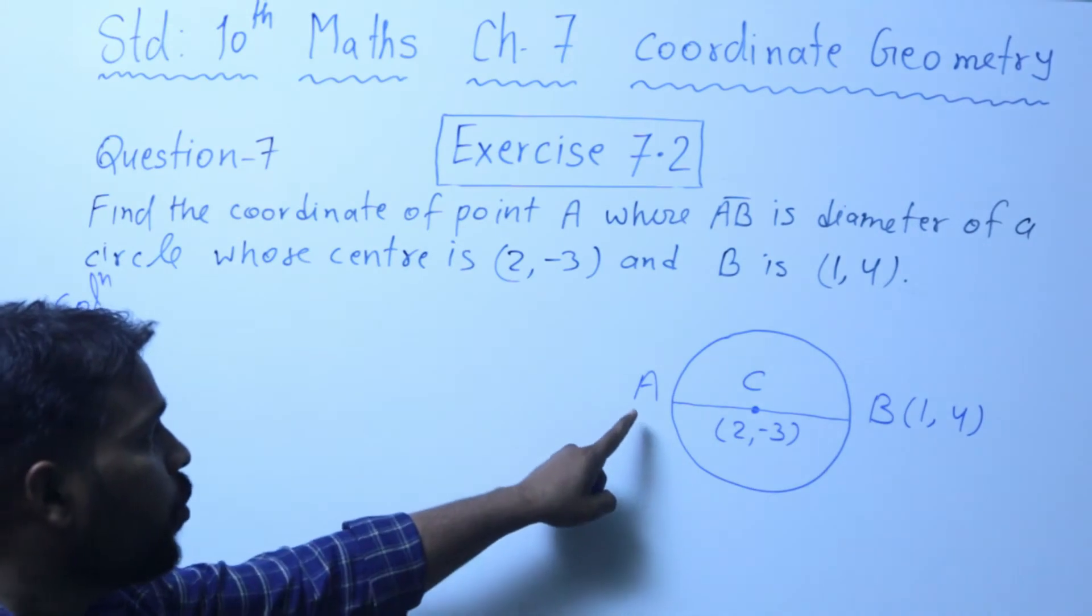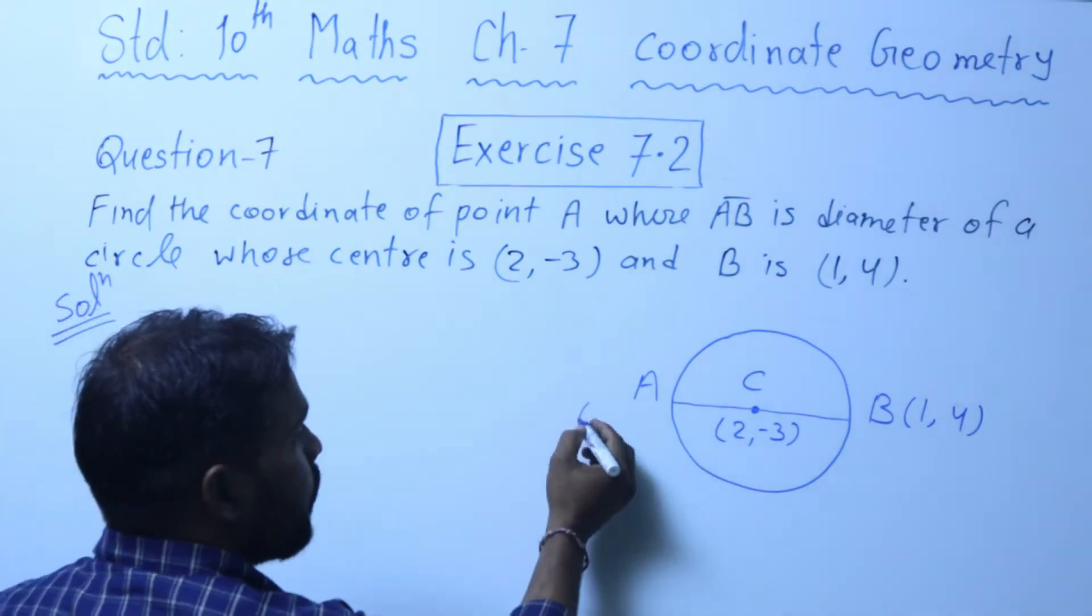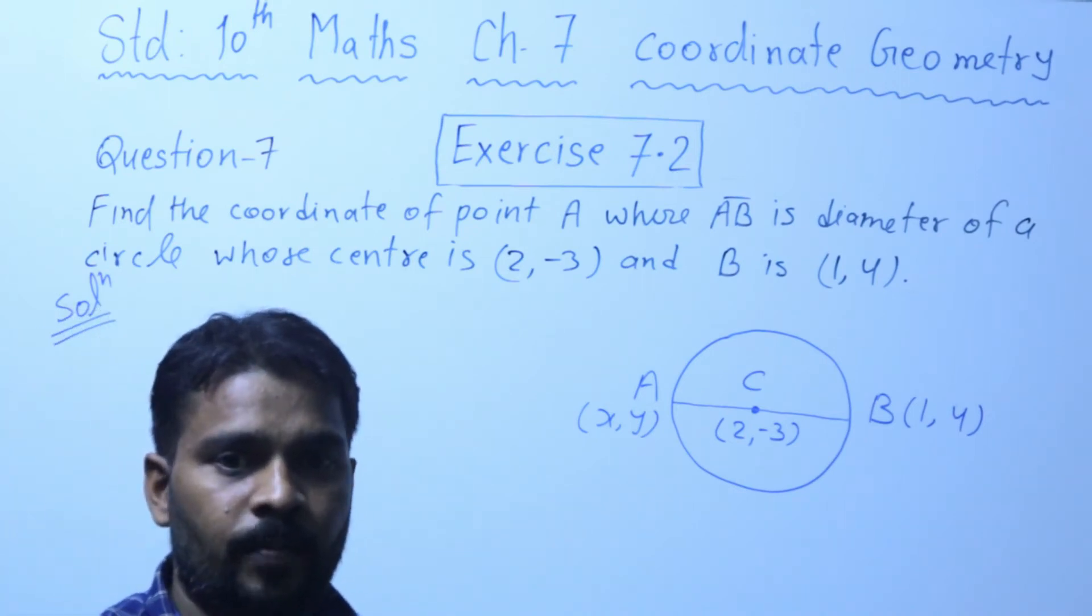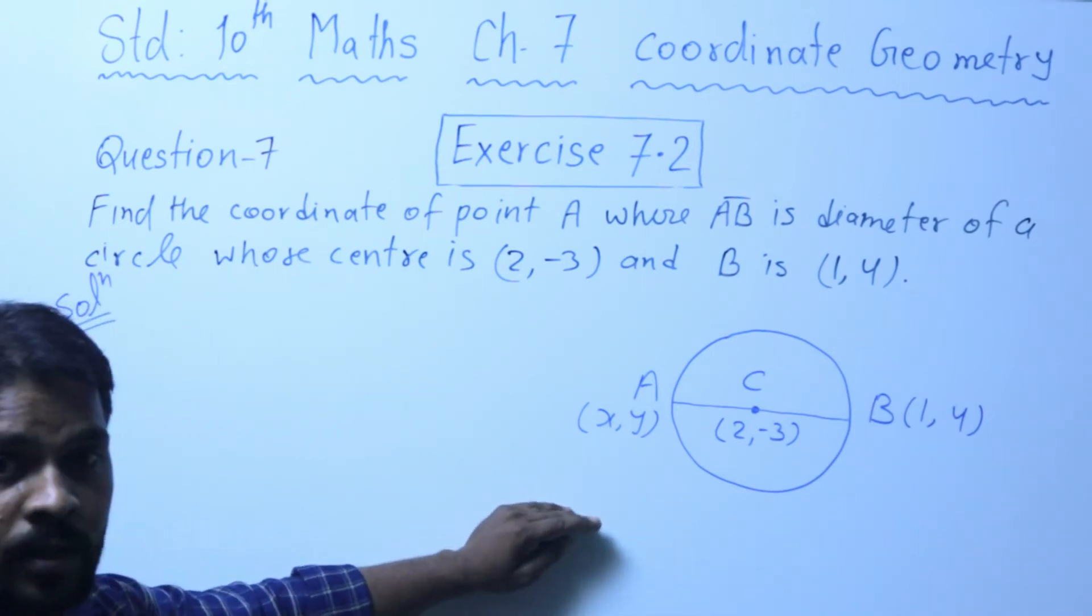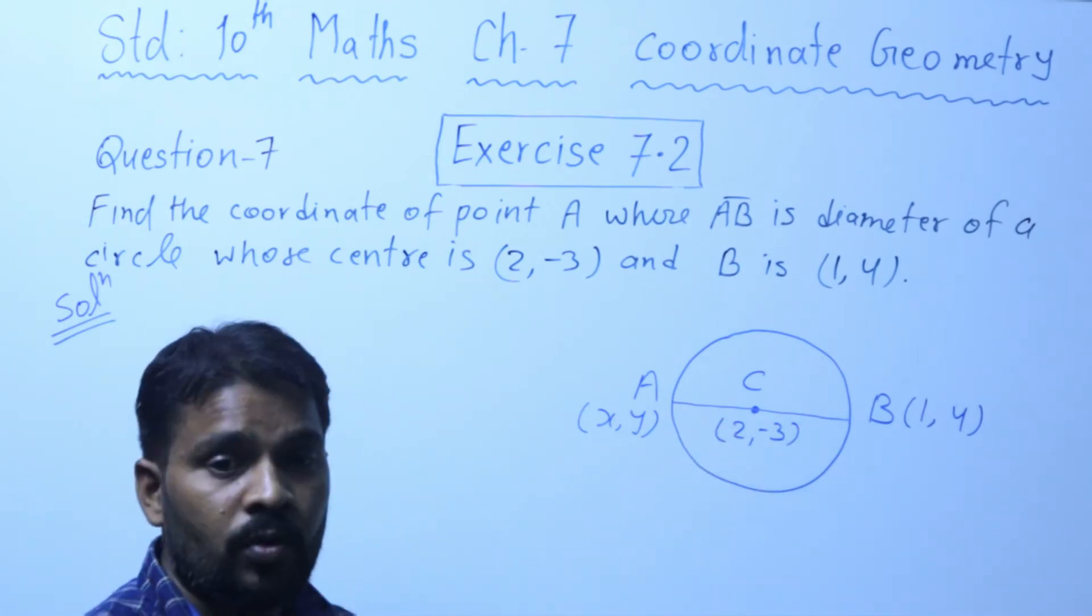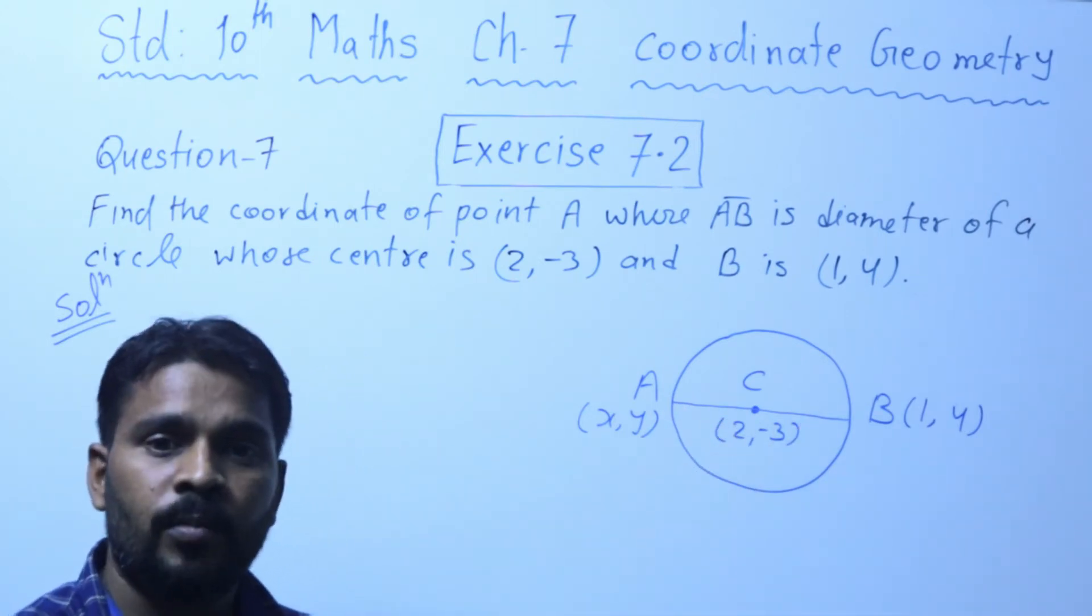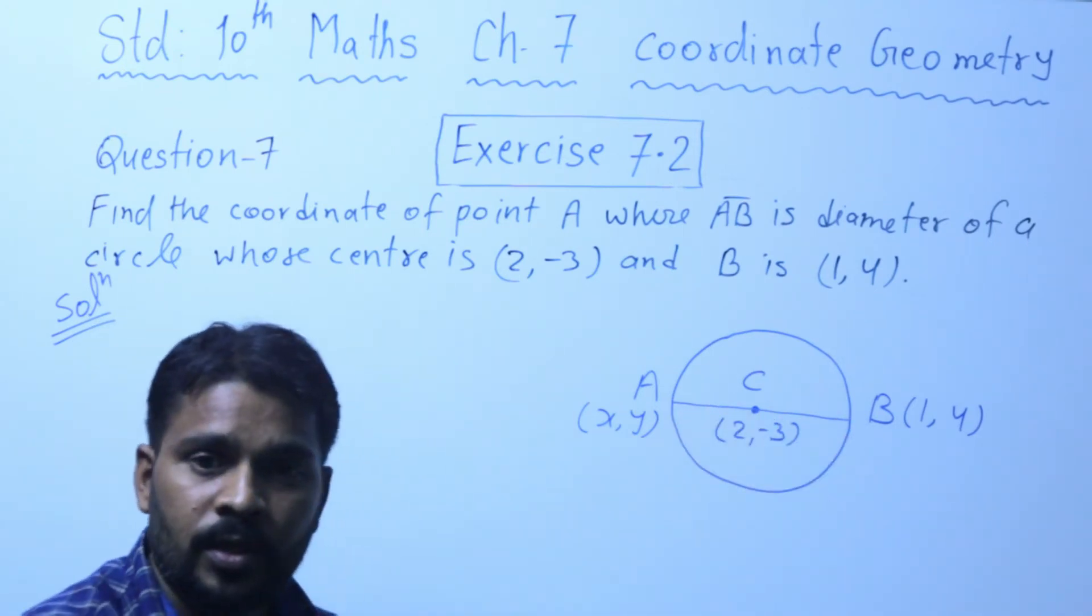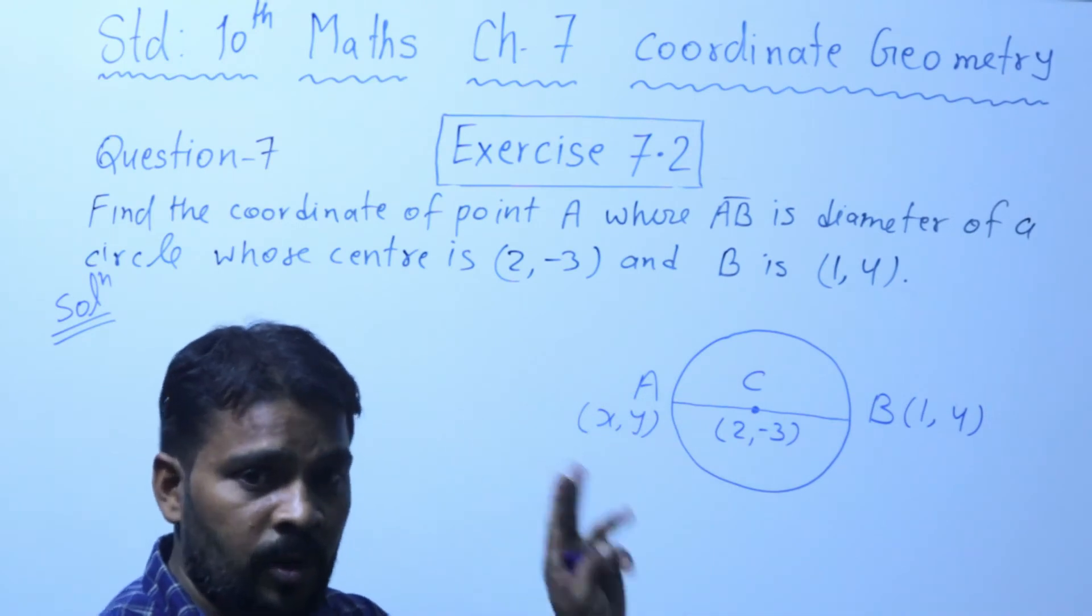So friends, you need to find point A's coordinate, suppose (x, y). You need to find the value of x and y. You should know that any diameter is divided into two halves through the center, means C is midpoint of AB.